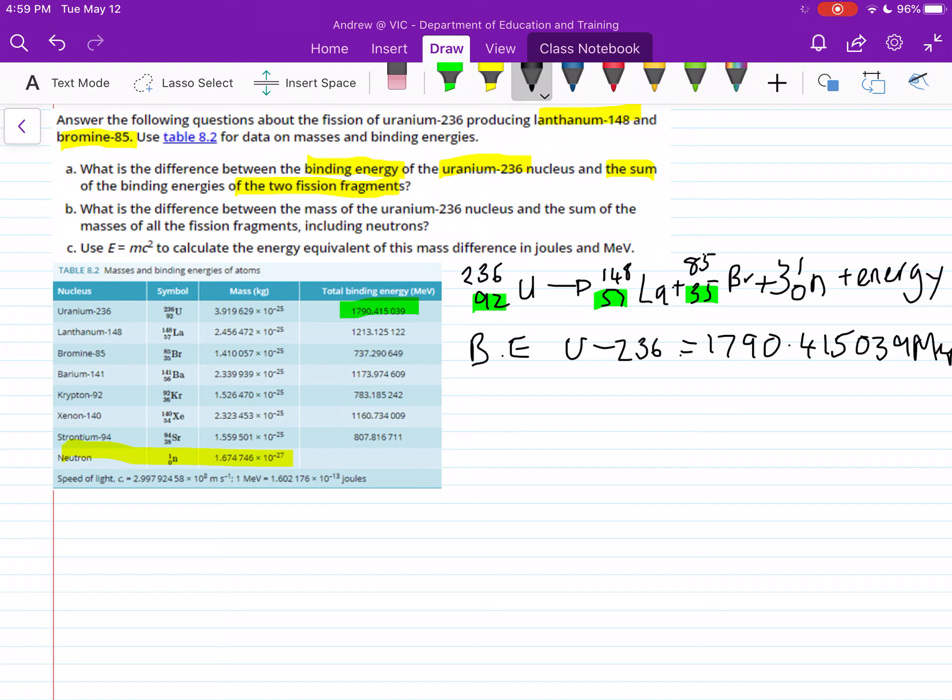Then we just need to add up our binding energy of lanthanum and bromine. Binding energy of lanthanum, and I should write the symbol after it. So it's lanthanum-148. This here is 1213.125122.